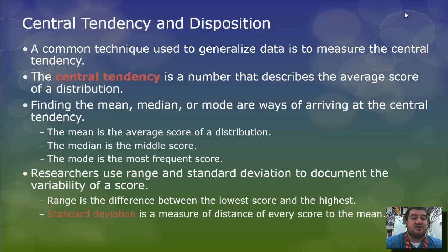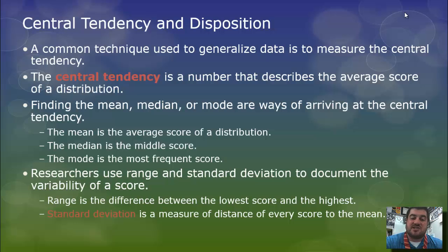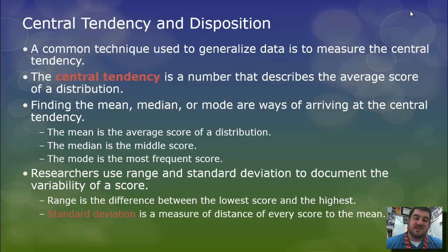We also use range and standard deviation to talk about the variability of a score. The range is the difference between the lowest and highest score. The standard deviation is a measure of the distance of every score to the mean.